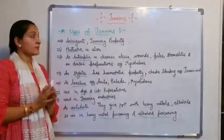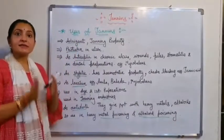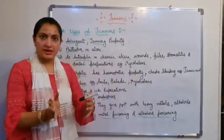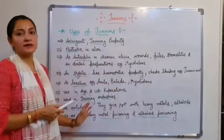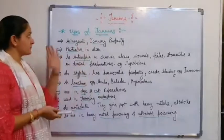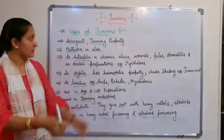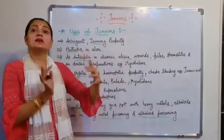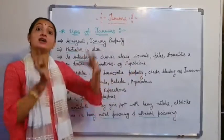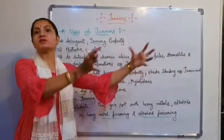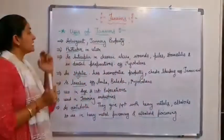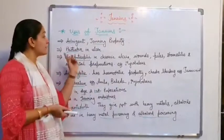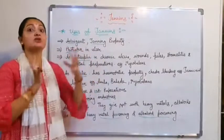Now, uses of tannins. First, tannins are used as an astringent. Second, they have a tanning property — they convert skin into leather, so they are used in leather preparations. Third, they have a protective effect, and because of this protective effect they are used in ulcer treatment.